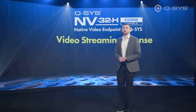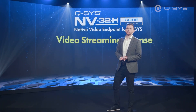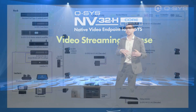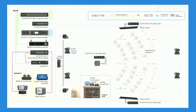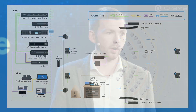If we look at a different space — a higher education space — it makes more sense having the NV32 as an encoder in this situation, because we've got lots of sources we want to encode, and it's a high-density encoder. Here we've got NV21s as the decoders, because we have several single displays. But again, we don't need to add a core nano; we can simply make that NV32 the encoder and the core as well.